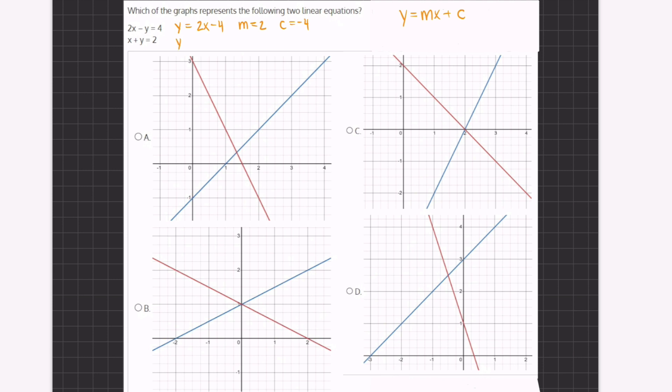And in our second equation, we have y equals negative x plus 2. I just moved the x, I subtracted the x on both sides, and now our slope is a negative 1, and our y-intercept is a positive 2.